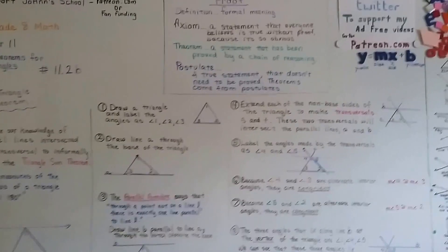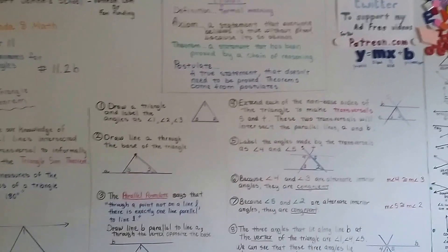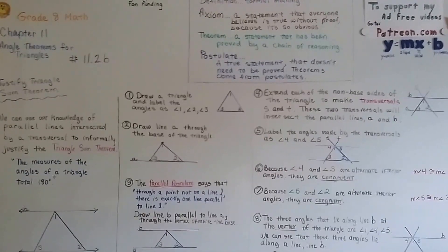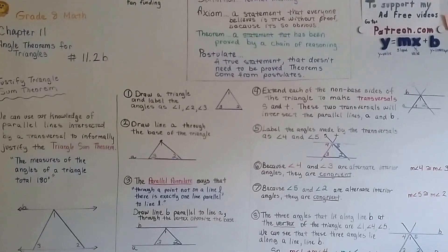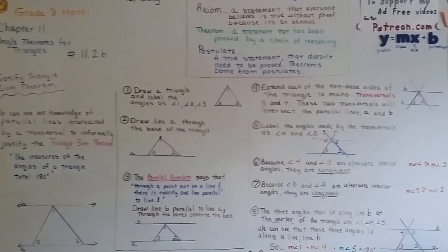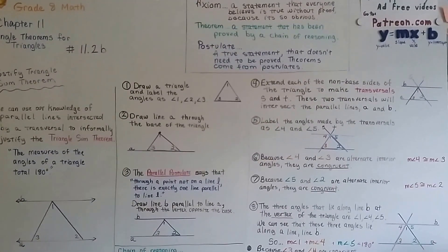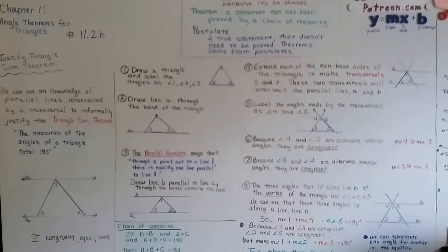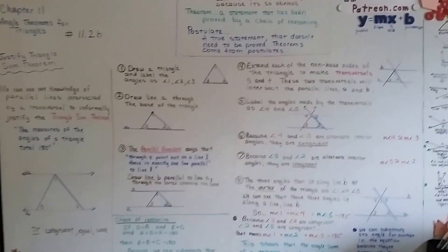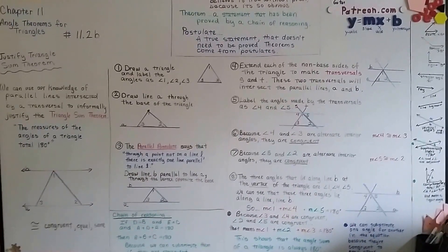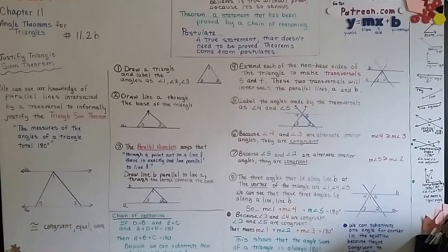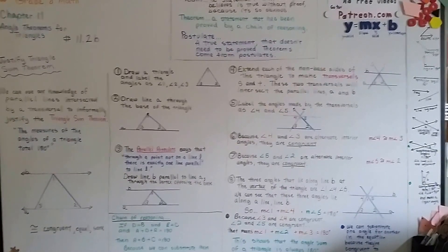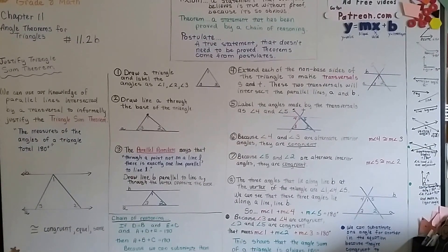We're going to move on to the next video. We're going to talk about finding missing angle measures in triangles. I hope this was helpful. I hope you're doing okay — keep your chin up. We're slowly making it through this. I know you can do this. I believe in you. See you next video. Bye.